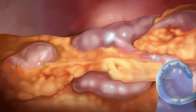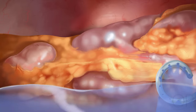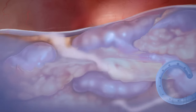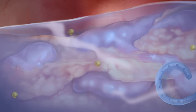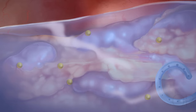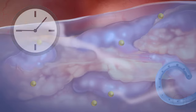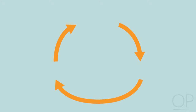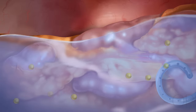Step two is fill. A special sugary solution, called dialysate, enters the peritoneal cavity through the catheter. Step three is dwell. The dialysate solution sits in the abdomen and pulls waste and extra fluid from the body. The dwell time is how long the fluid sits in the abdomen. The steps repeat, starting another cycle of drain, fill, and dwell. Each cycle should remove some fluid from the body.